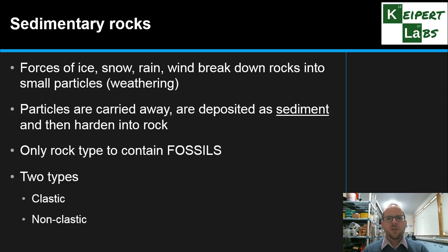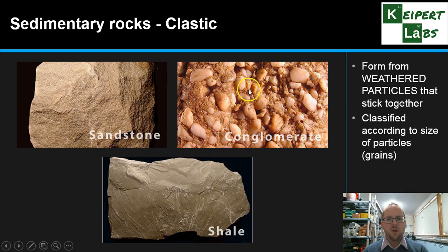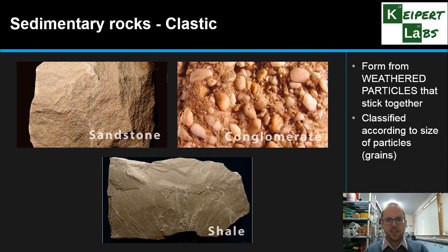There are two types of sedimentary rocks: clastic and non-clastic. Clastic sedimentary rocks form from weathered particles that stick together, and they're classified according to the size of the particles or grains. Conglomerate has very large, almost pebble-sized particles, whereas sandstone and shale involve much smaller particles.